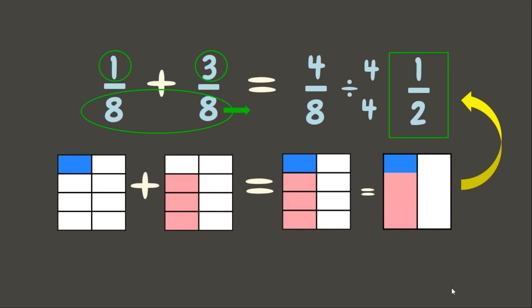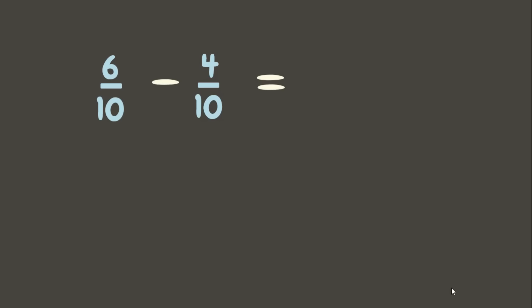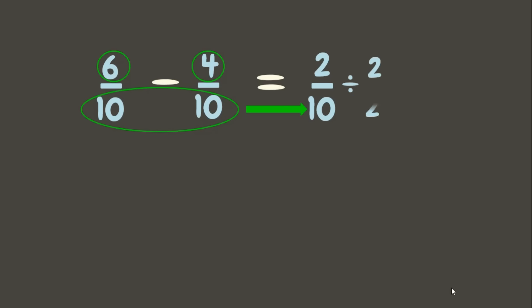Great job! Let's try some more. This time we are going to try subtraction: six-tenths minus four-tenths. Six minus four equals two; copy the common denominator, ten. Let's simplify it by dividing by its GCF. The GCF of two and ten is two. Two divided by two is one, and ten divided by two equals five. The final answer is one-fifth. Let's check our answer by drawing some representations.